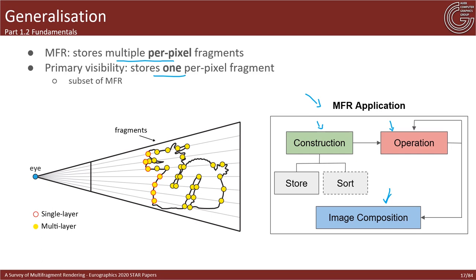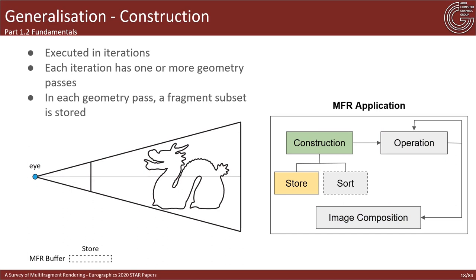The construction step is responsible for generating and storing multiple per-pixel fragments through a traditional rasterization procedure repeated over a fixed number of iterations. Each iteration is executed in one or more geometry rendering passes, and in every geometry pass, a fragment subset associated with a specific pixel is selected, stored, and eventually sorted. Even though storing and sorting are two fundamental building blocks, the sorting stage can be performed either explicitly or implicitly.